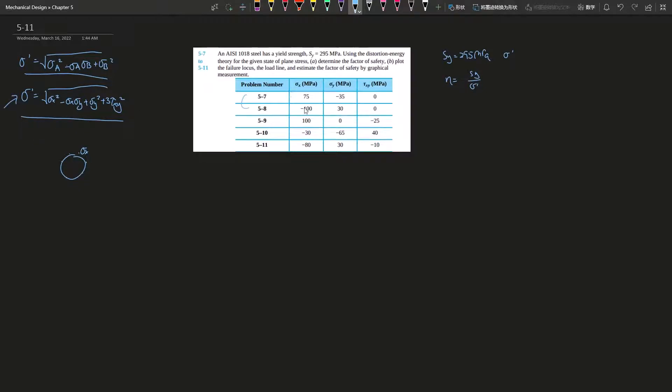For this one as well, you can still use it; it's just that this equals zero, and then this is σ_a and this is σ_b. It's the same thing as on top.